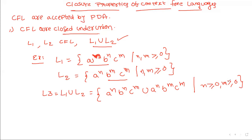L1 contains equal number of A's and B's; L2 contains equal number of B's and C's. Their union says either of the two conditions is true — it is like an OR operation. If this condition is satisfied or that condition is satisfied, then context-free languages are closed under union. This is the first point.